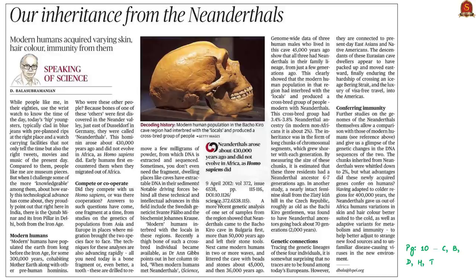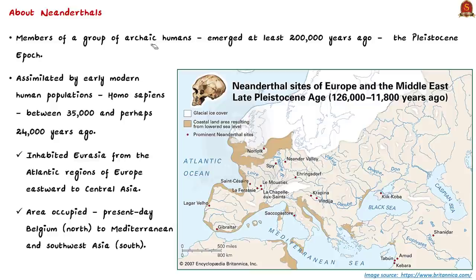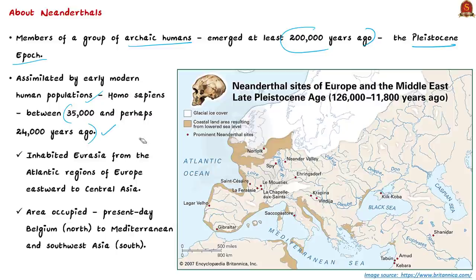Our next discussion is based on studies on the genomes of Neanderthals. Neanderthals are members of a group of archaic humans who emerged at least two lakh years ago during the Pleistocene epoch. They were replaced or assimilated by early modern human populations — Homo sapiens — between 35,000 and 24,000 years ago. Neanderthals inhabited Eurasia from the Atlantic regions of Europe to Central Asia, as far north as present-day Belgium and as far south as the Mediterranean and southwest Asia.